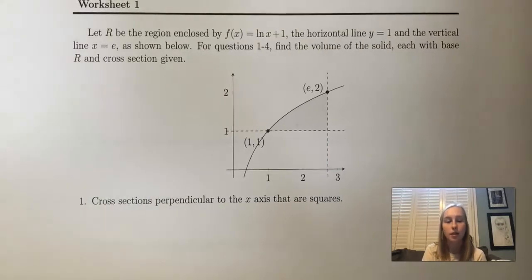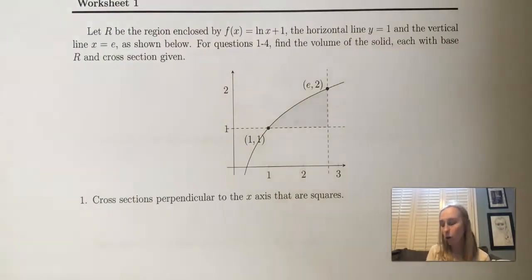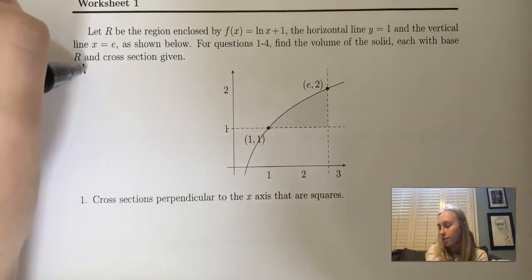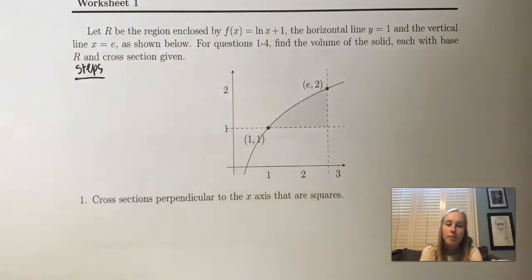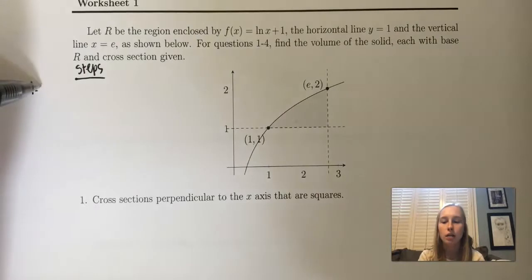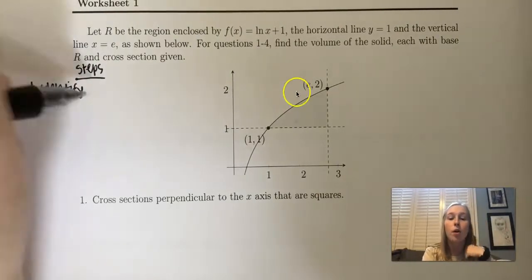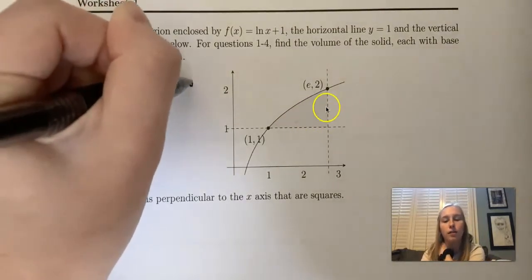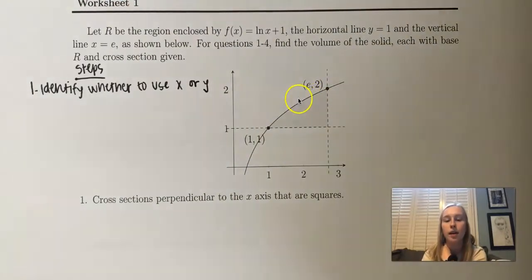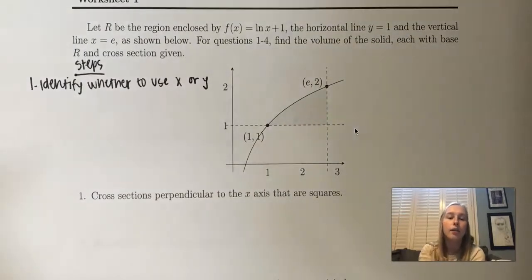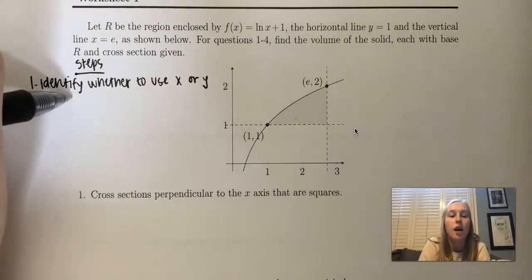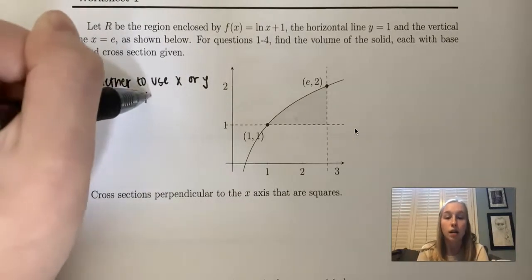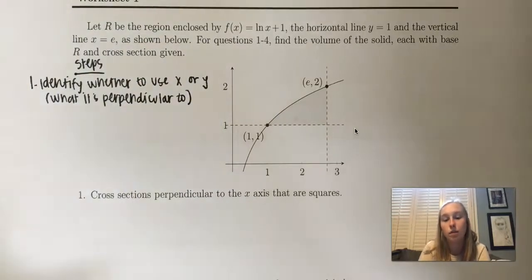Step one is identifying whether you're going to be using X or Y. That means whether the semicircles are going to go from top to bottom or from right to left. The way you identify that is in each question it's going to say cross sections perpendicular to an axis. If it's the X axis, you're going to be using X values; if it's the Y axis, you're going to be using Y values.